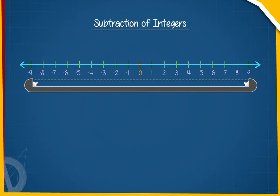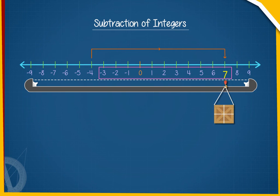Now, if we have to subtract minus 4 from 7, we will write it as 7 minus minus 4. On the number line, we will count numbers from minus 4 to 7 to get 11.